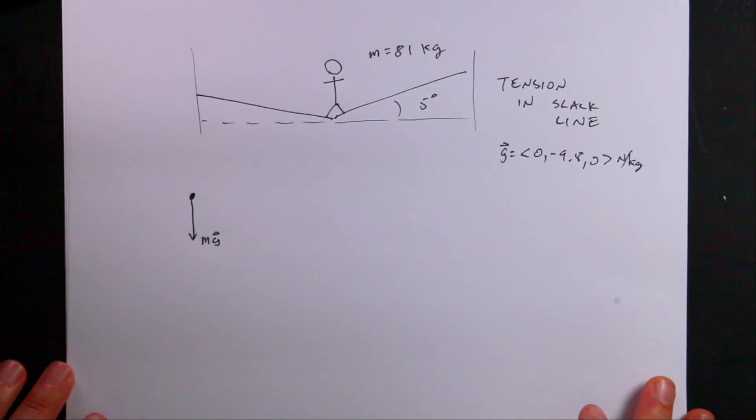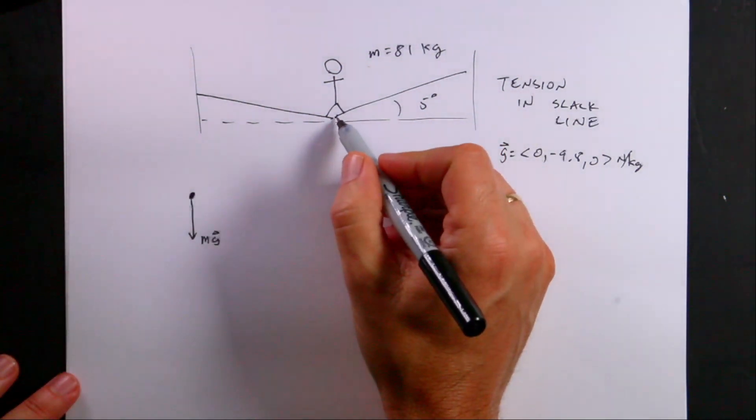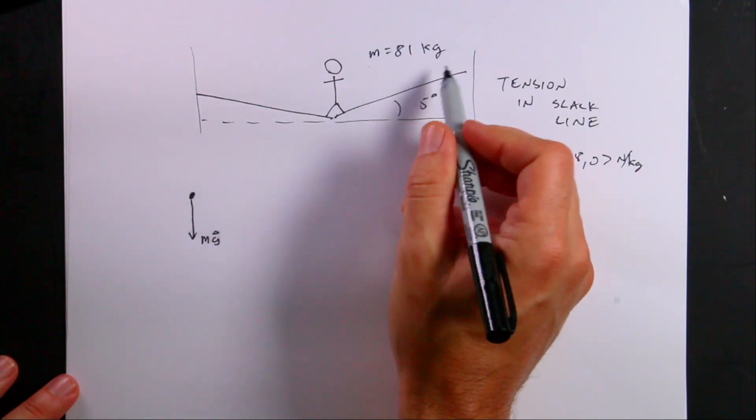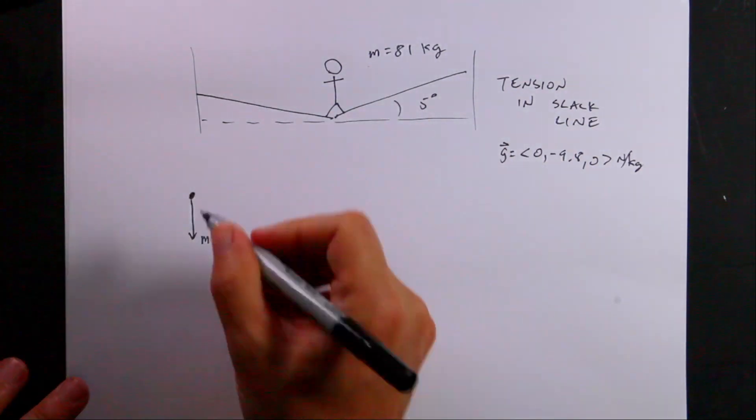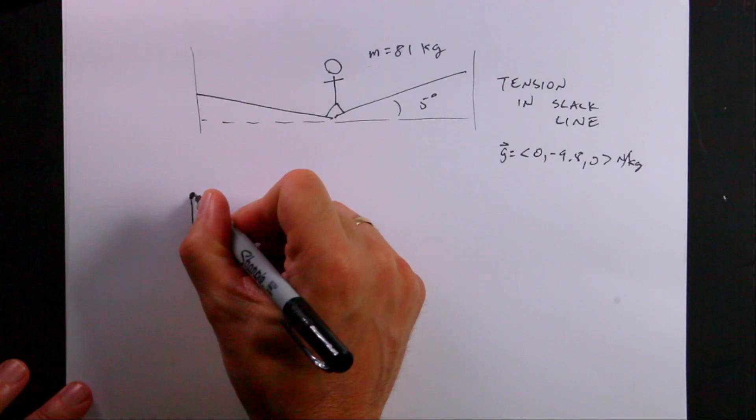Now, what contact forces do I have on the person? What's touching the person? And the answer is the rope. But the rope actually pulls in two ways. We can think of this as two ropes. One rope pulling that way and one rope pulling that way. So let's write that as two different lines.